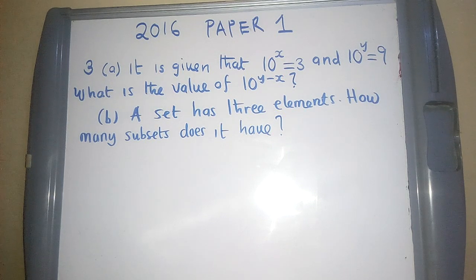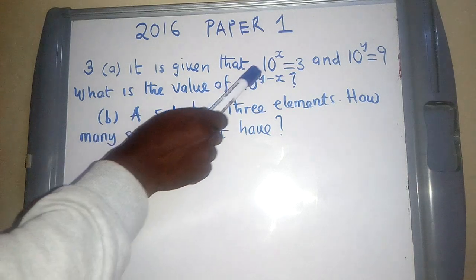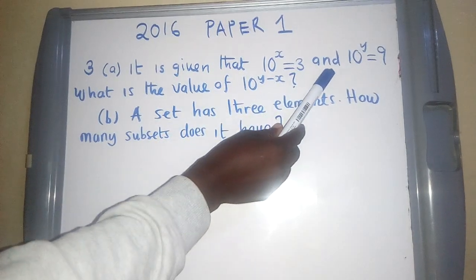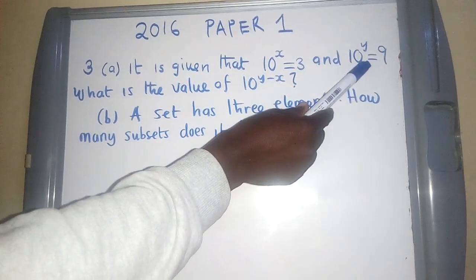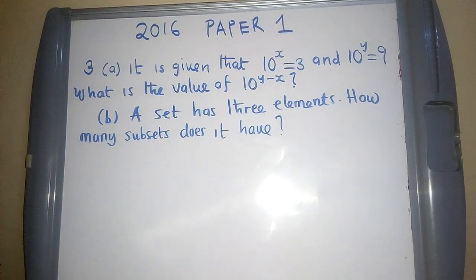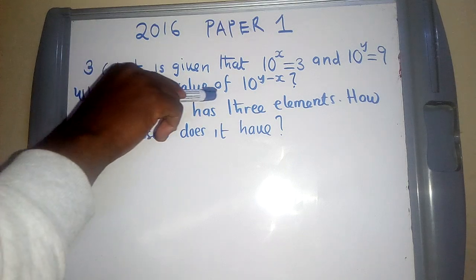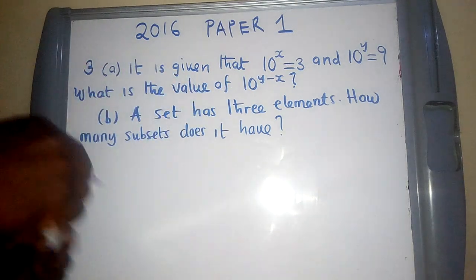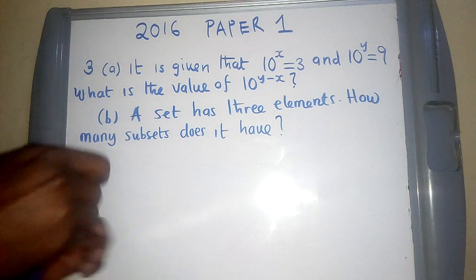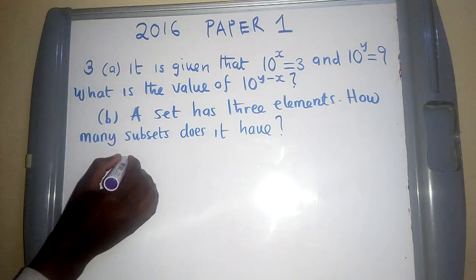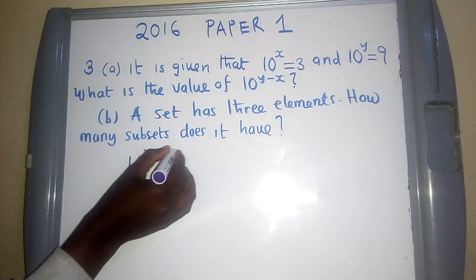So A says it is given that 10 to the power x is equal to 3 and 10 to the power y is equal to 9. What is the value of 10 to the power y minus x?